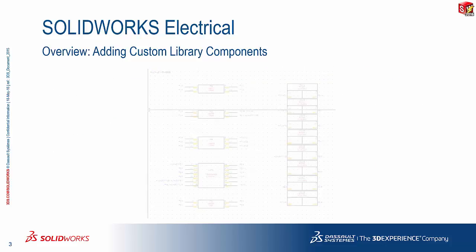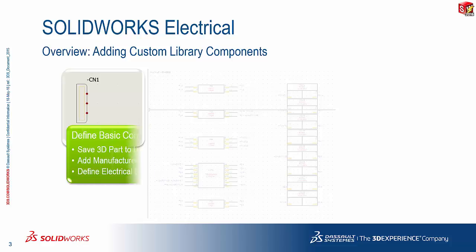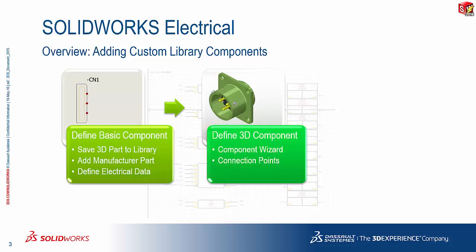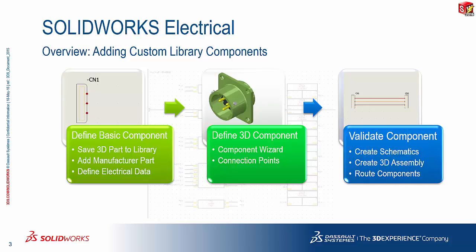Starting off, I like to break it down into three very logical parts. You need to start off by defining the basic components — you need a basic 3D part and the manufacturer part data. You also need to define electrical information. Following that, you'll need to define information on the 3D component using the component wizard in SOLIDWORKS ELECTRICAL 3D, if you are going to be working in a 3D environment. And lastly — please don't skip this — test your components before proceeding. I've seen numerous users who try creating their parts, add them to a project, and find the components don't work because they've left out some information.